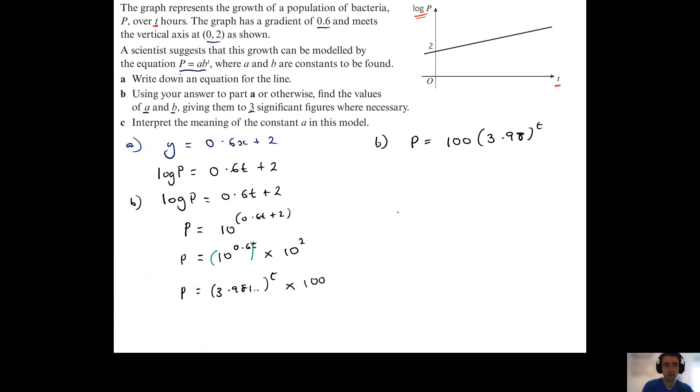Just comparing that with the form of the equation that I've been given, p equals ab to the power of t, we can see that a is equal to 100 and that b is equal to 3.98, and both those values have been rounded to three significant figures.